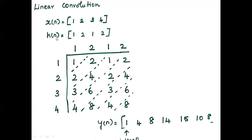The input H(n) values are 1, 2, 1, 2. We then perform multiplication: 1 multiplied with 1, 2, 1, 2; then 2 multiplied with 1, 2, 1, 2; then 3 multiplied with 1, 2, 1, 2; and 4 multiplied with 1, 2, 1, 2 — obtaining the corresponding partial product values in each row.